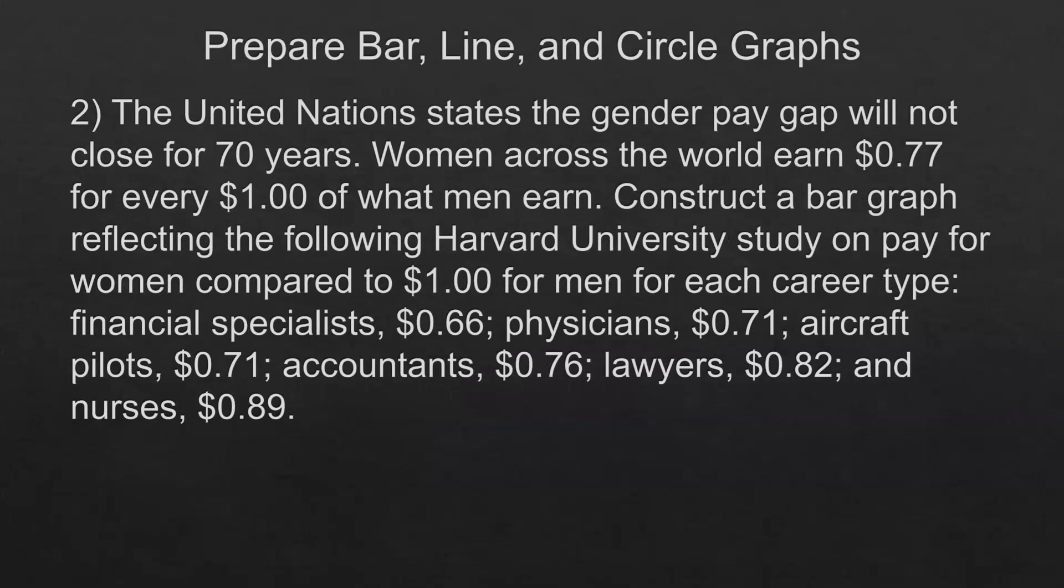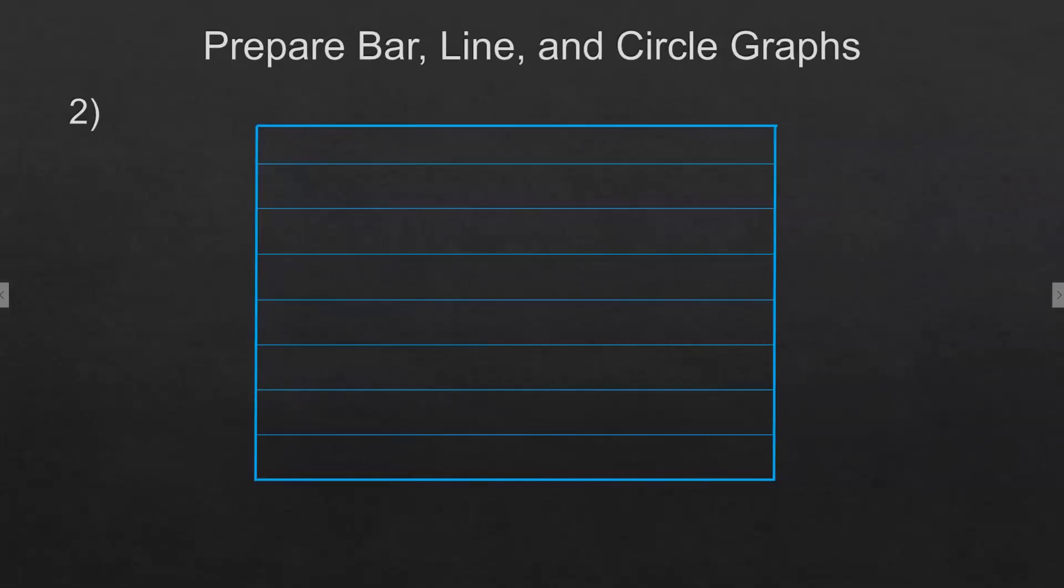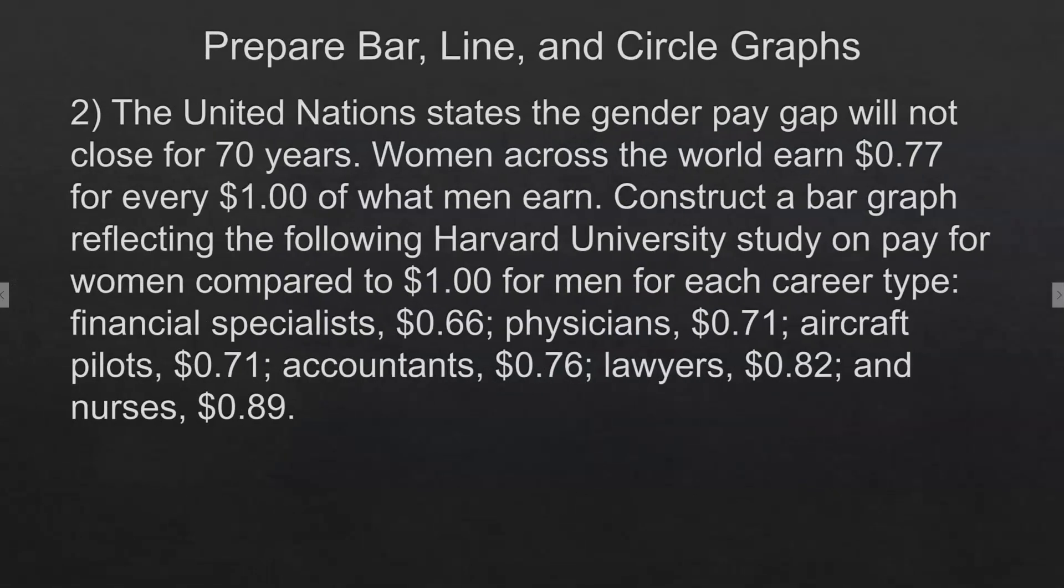We're going to make a bar graph. I will probably pause this video while I'm drawing some of this. The United Nations states the gender pay gap will not close for 70 years. Women across the world earn 77 cents for every one dollar of what men earn. Construct a bar graph reflecting the following Harvard University study on pay for women compared to one dollar for men. For each career type: financial specialist 66 cents, physician 71, aircraft pilot 71, accountants 76, lawyers 82 and nurses 89.